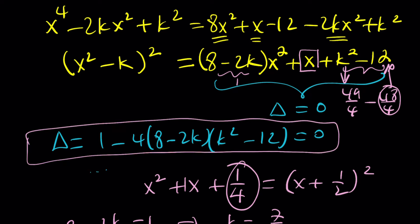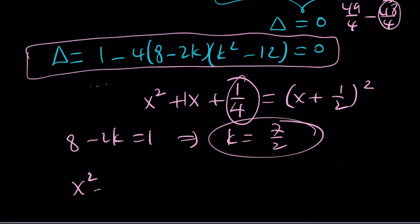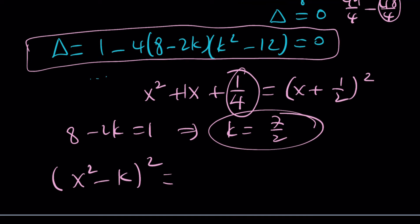That's 1 fourth. So k equals 7 halves is a rational solution. The other ones are irrational. Not good. So let's go ahead and go with k equals 7 halves. What does that give me? That gives me the following. x squared minus k squared equals x plus 1 half squared.